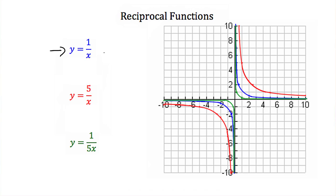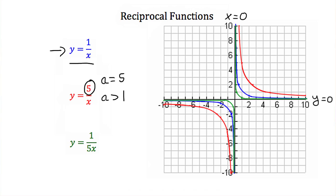We're given the graph of y is equal to 1 over x, drawn in blue. Next we'll compare the graph y is equal to 5 over x, where our a is equal to 5, meaning our a is greater than 1. Notice that because our a is greater than 1, we are stretching this graph. This graph has the same asymptotes as y is equal to 1 over x, at x equals 0 and y equals 0, but these points are further away from the asymptotes than in our parent function. That is because this graph has been stretched by a factor of 5.